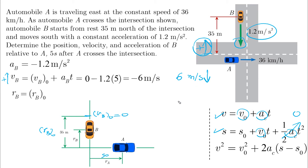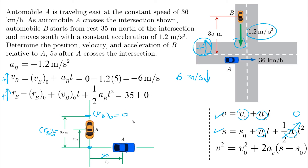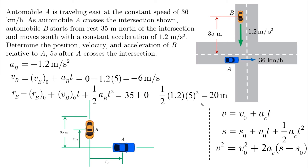For the position, RB equals RB-naught plus VB-naught times T plus one-half times AB times T squared. Assuming the origin is at the intersection, RB-naught is 35 meters in the positive direction, VB-naught equals zero, and AB is minus 1.2. Substituting T equals 5 seconds gives us 20 meters — meaning car B is now 20 meters from the intersection.